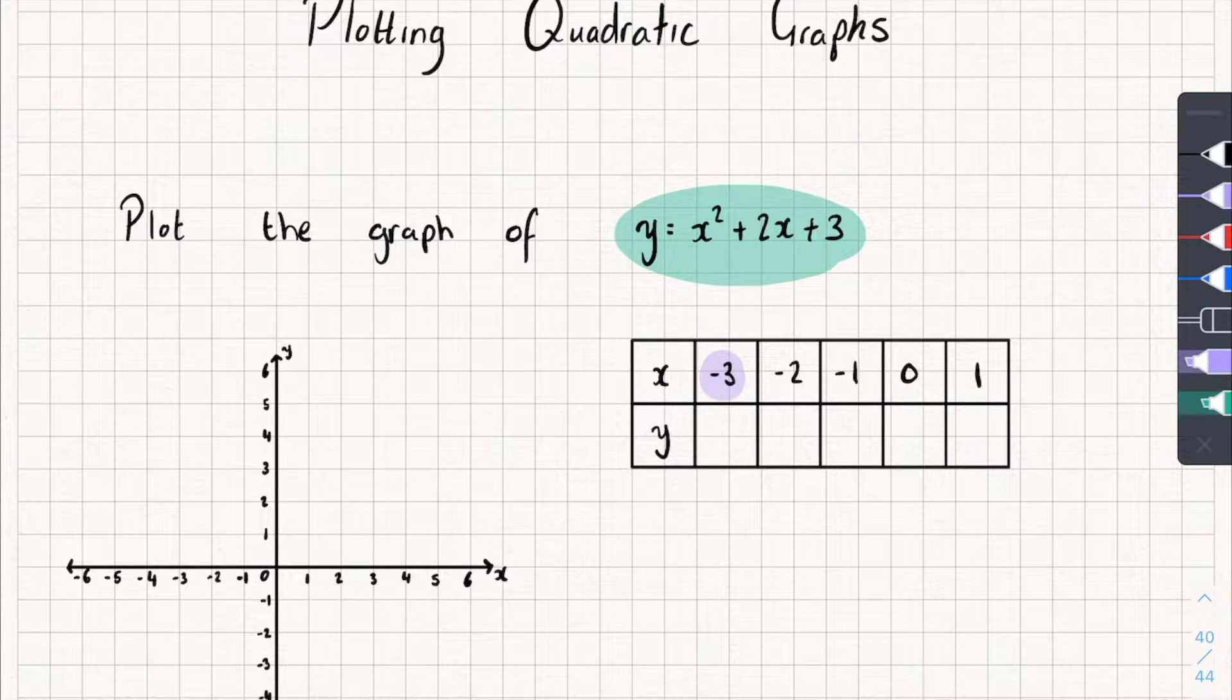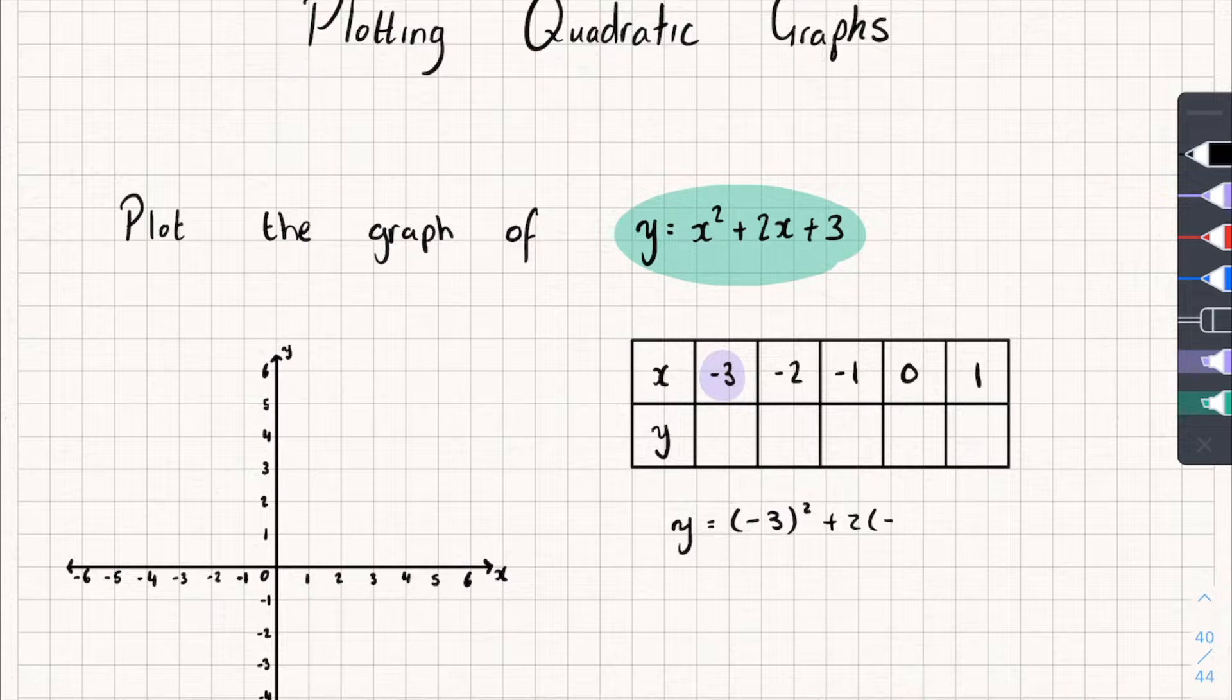So when x is equal to negative 3, y is equal to, well let's look at the quadratic. It goes x squared, so negative 3 squared plus 2x, so plus 2 times negative 3 plus 3. So let's simplify that. Negative 3 squared is 9 plus 2 times negative 3 is negative 6 plus 3. So we get 9 subtract 6 which is 3 plus 3 is 6. So when x is negative 3, y is equal to 6.